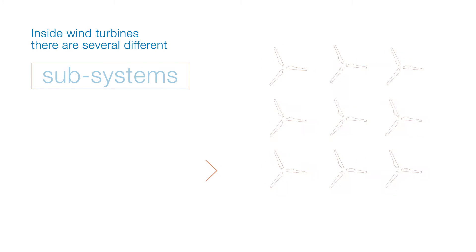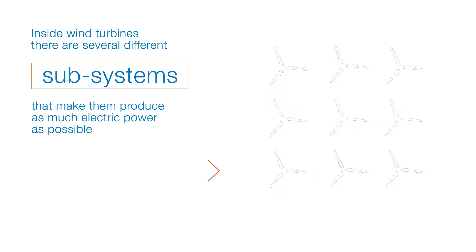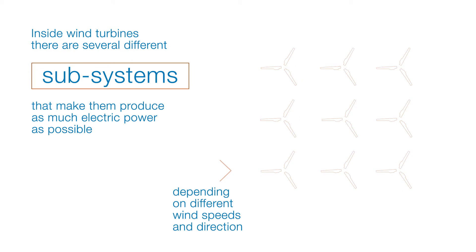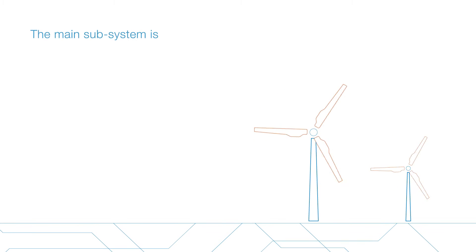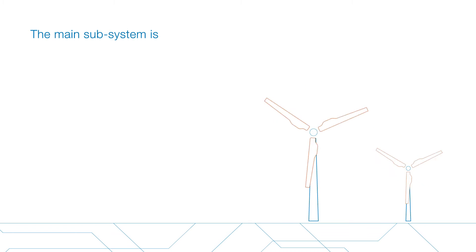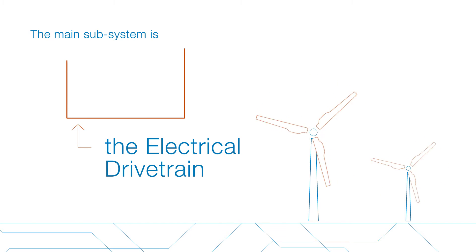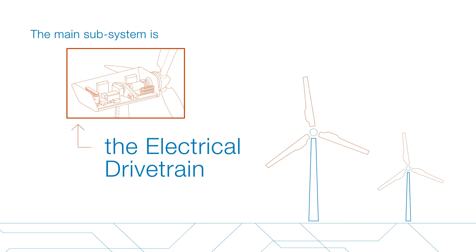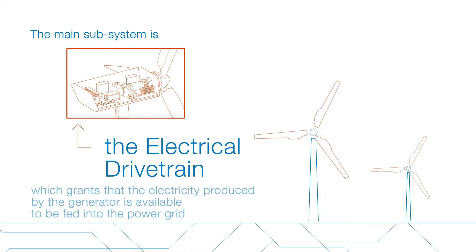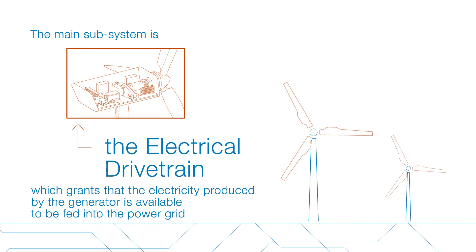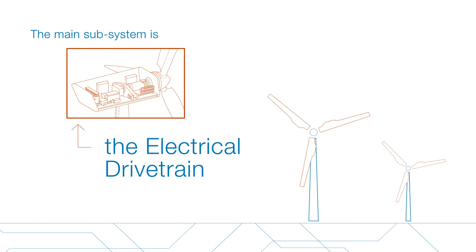Inside wind turbines there are several different subsystems that make them produce as much electric power as possible depending on different wind speeds and direction. The main subsystem is the electrical drivetrain, which ensures that electricity produced by the generator is available to be fed into the power grid.